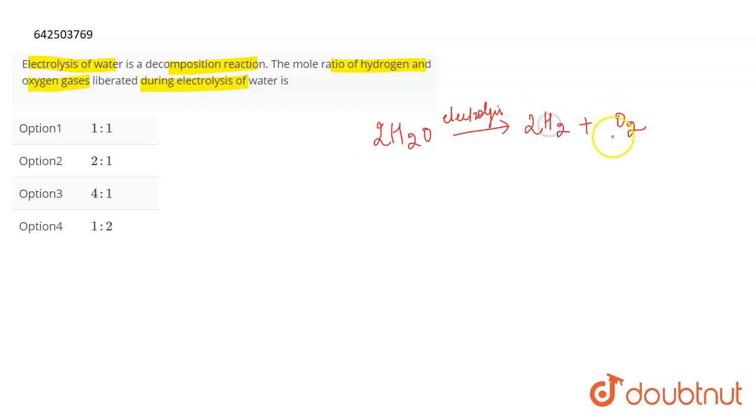2H2 and O2. So when water is electrolyzed, it gives H2 gas and O2 gas as its products. What is the molar ratio? If you balance the reaction, this is the balanced reaction